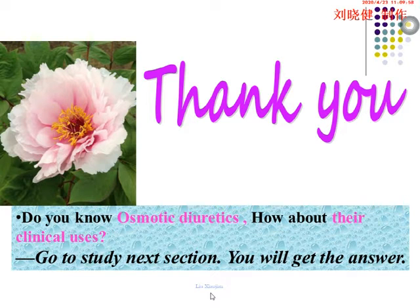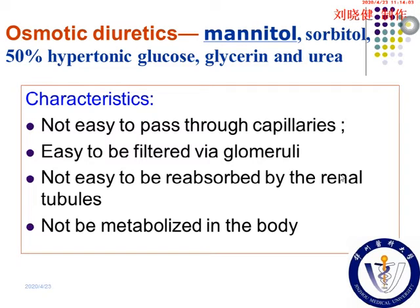In this chapter, we will also study osmotic diuretics. Osmotic diuretics include mannitol, sorbitol, 50% hypertonic glucose, glycerin, and urea. Mannitol is the representative drug in this group. For drugs to work as osmotic diuretics, they must have the following characteristics: they are not easy to pass through capillaries, so they stay in blood vessels to maintain osmotic pressure in the blood.